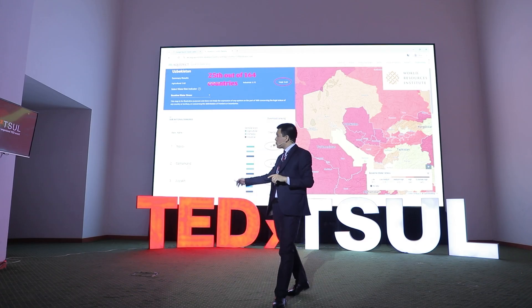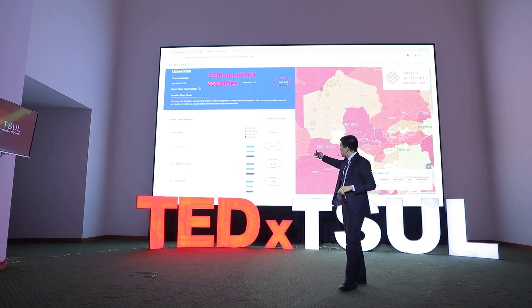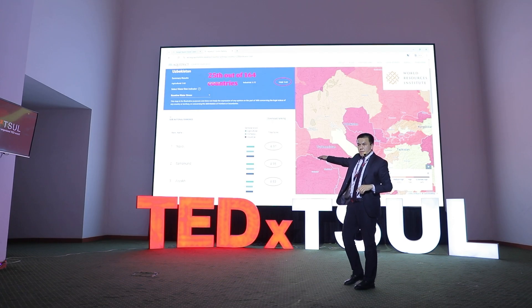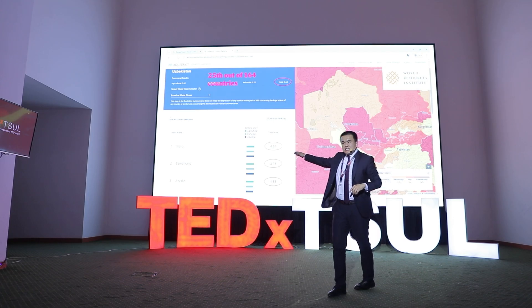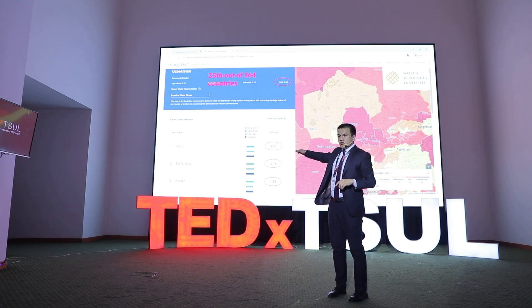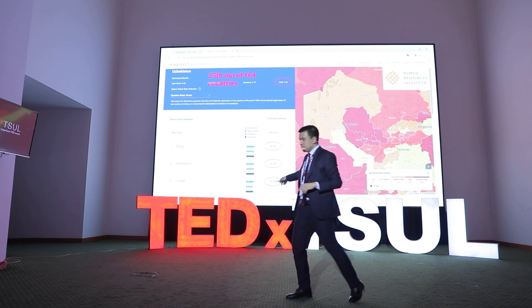Looking at three specific regions — the Navoi region, Samarkand region, and Jizzakh — their water stress indicator is approaching an index of 5. It's shocking.